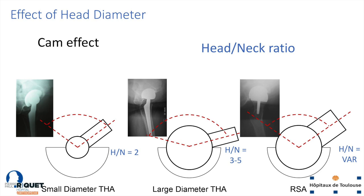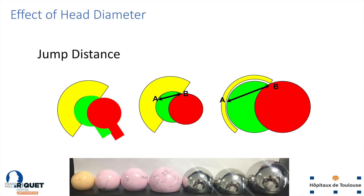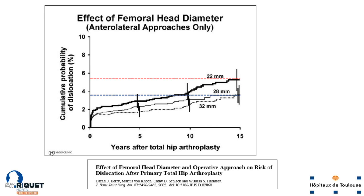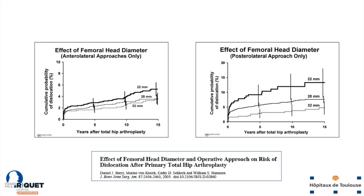This may not result in dislocation, but might result in limitation of the range of motion. So we certainly have to increase head size, but up to which size we're going to discuss. A second way head size impacts dislocation and stability of the hip is by increasing the jump distance. As the head diameter increases, you increase the distance that the ball has to travel to get out of the socket. A 22 millimeter head is more at risk of dislocation than 28 or 32.